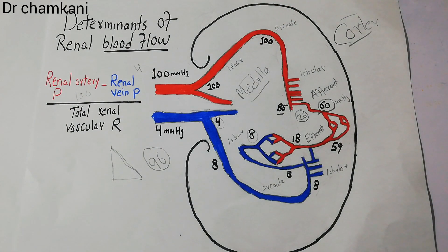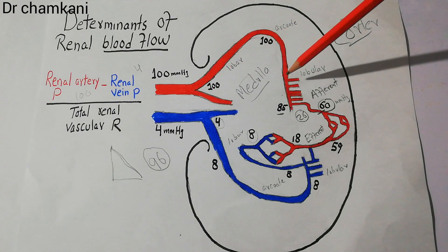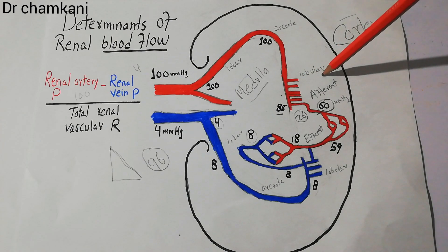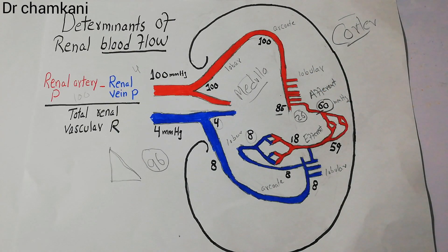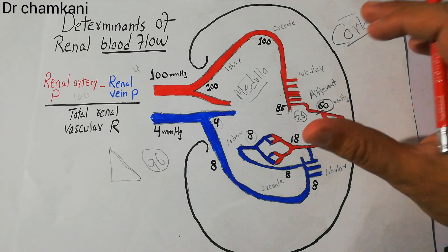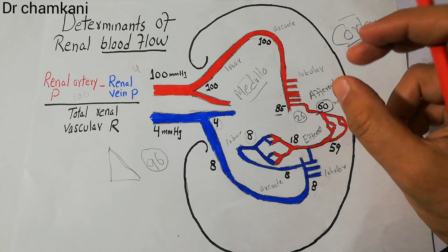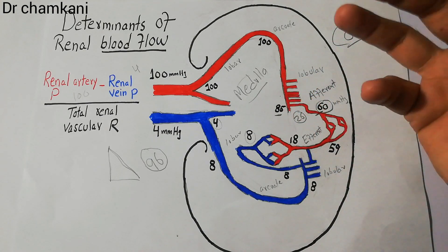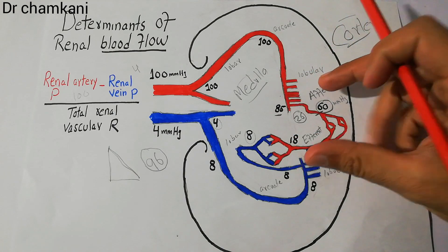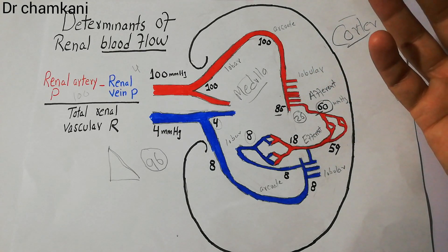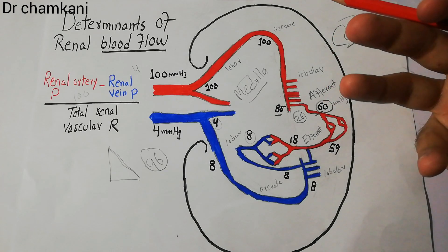The main points in the vasculature that bring the maximum decrease in arterial pressure are the interlobular arteries, the afferent arteriole, and the efferent arteriole. There are many factors — the nervous system, hormones, and various chemicals — that can act on these areas to either constrict or dilate them. If these regions are constricted, resistance increases and blood flow decreases; if dilated by nervous or hormonal stimulation, blood flow increases.